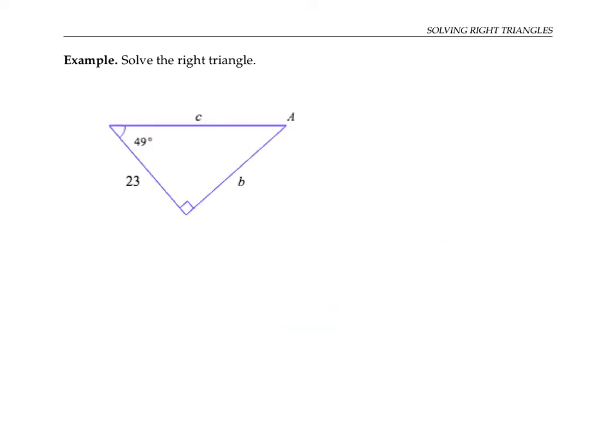In this example, we're given the length of one side and the measure of one angle, plus we know the measure of this right angle is 90 degrees. We need to find the measure of the third angle labeled capital A and the lengths of the two sides labeled lowercase b and lowercase c.